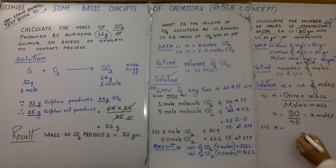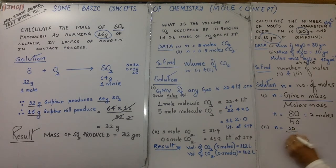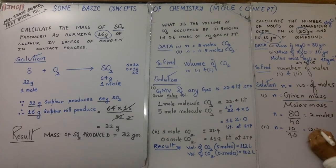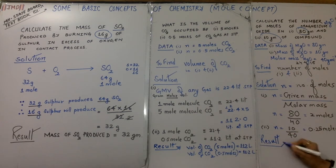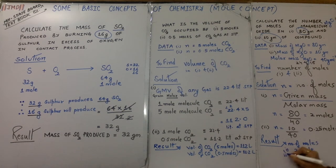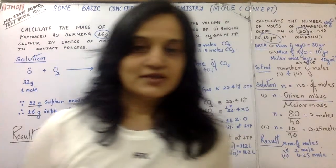Next we do case 2. N equals 10 upon 40, equal to 1 fourth, which means 0.25 moles. Next is the result: number of moles, case 1 is 2 moles, case 2 is 0.25 moles.